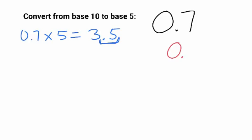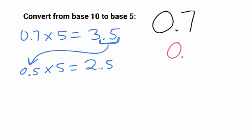And again, I look to the right of the decimal point, and there's something there, so I repeat the process. Put just that part, 0.5 times 5 is equal to 2.5. And is there something to the right? Yes, there is.